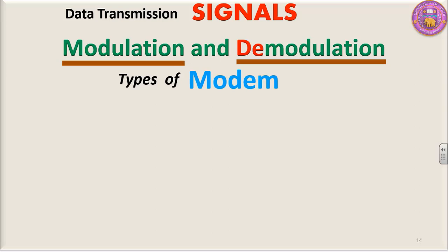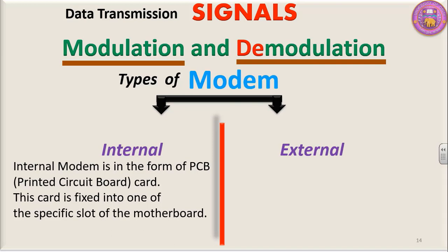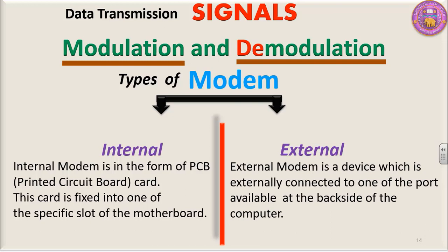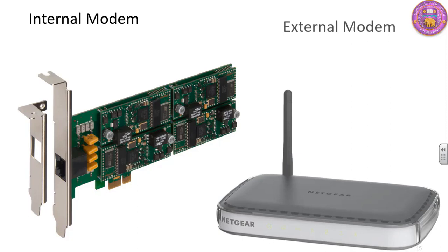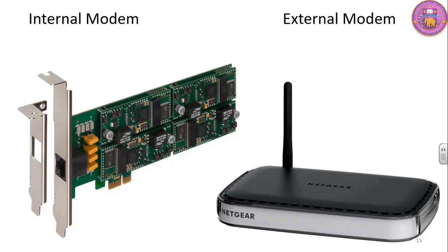There are two types of modem: internal modem and external modem. Internal modem is in the form of a PCB (printed circuit board) card, which is fixed into one of the specific slots of the motherboard. External modem is a device which is externally connected to one of the ports available at the back side of the computer. We learnt that modem is a device which converts digital signal to analog and analog signal to digital signal.